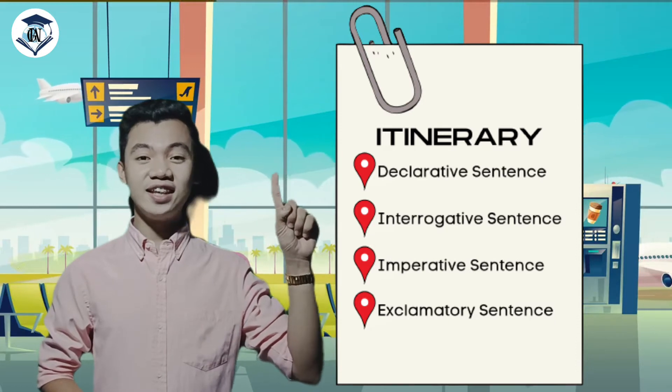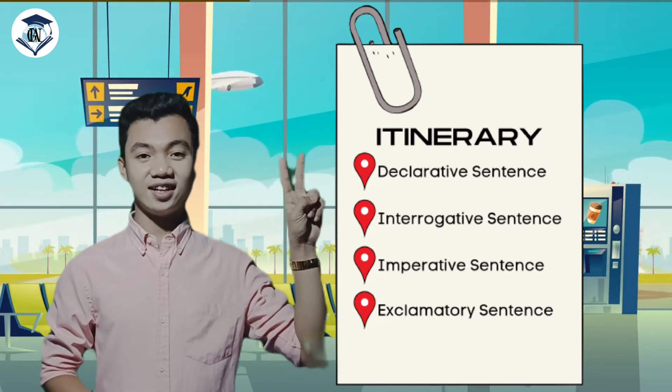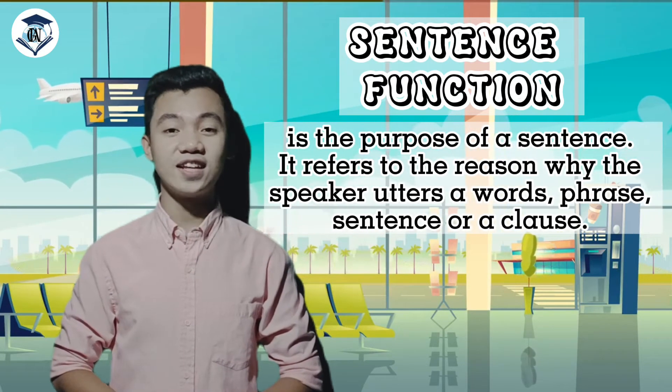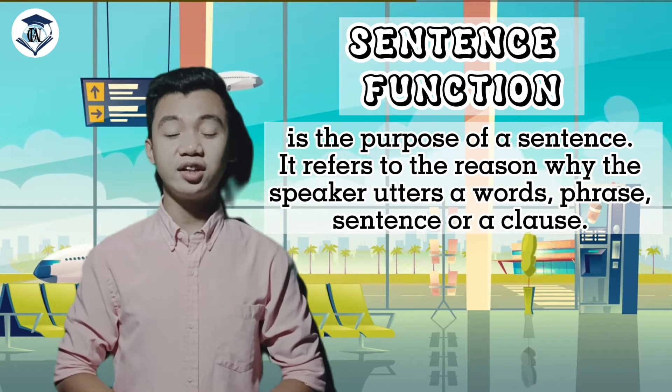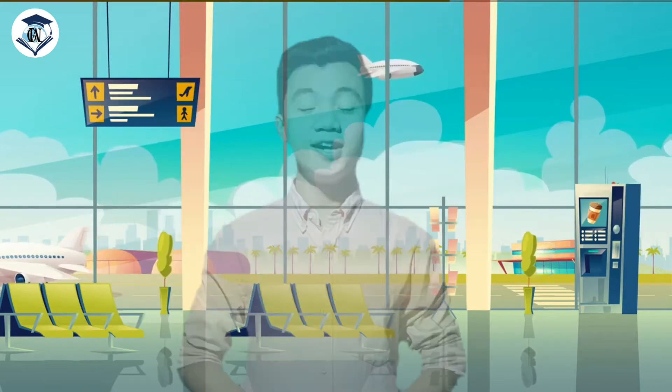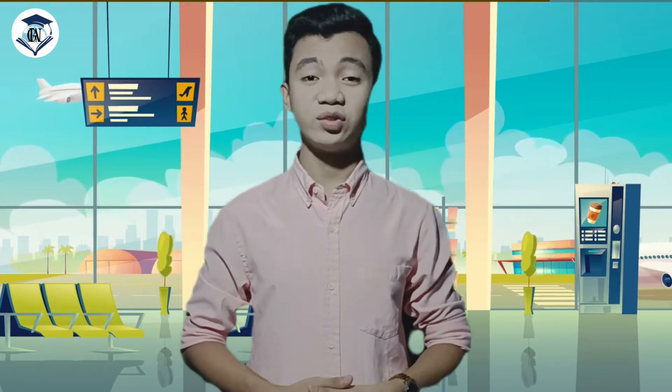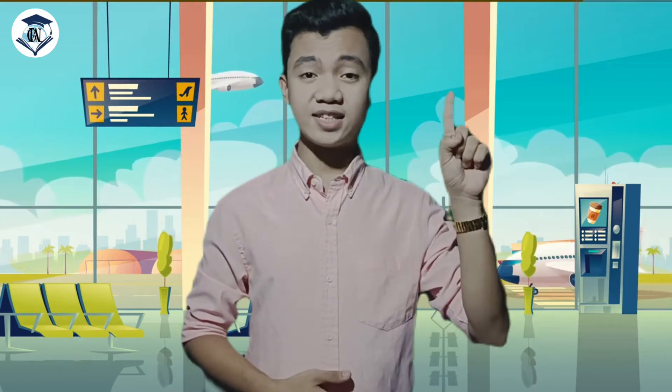For this lesson, we will be talking about sentence structure according to function. Here is our itinerary for today: first, declarative sentence; second, interrogative sentence; third, imperative sentence; and for the last, exclamatory or exclamative sentence. But before we go on to our first destination, let us first know what a sentence function is. Sentence function is the purpose of the sentence. It refers to the reason why the speaker utters a word, phrase, sentence, or a clause. The English language has four primary sentence functions: declarative, interrogative, imperative, and exclamatory. If you want to determine a sentence function, ask yourself: what is the point of the sentence, and what is it trying to accomplish?